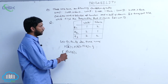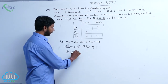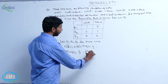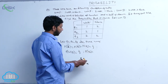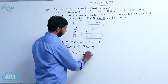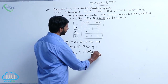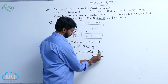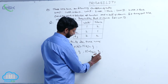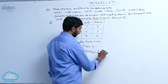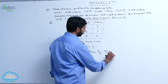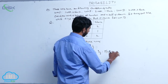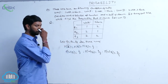The probability of a white ball from the first box is 1/3. The probability of a white ball from the second box is 2/3. And the probability of a white ball from the third box is 2/4.